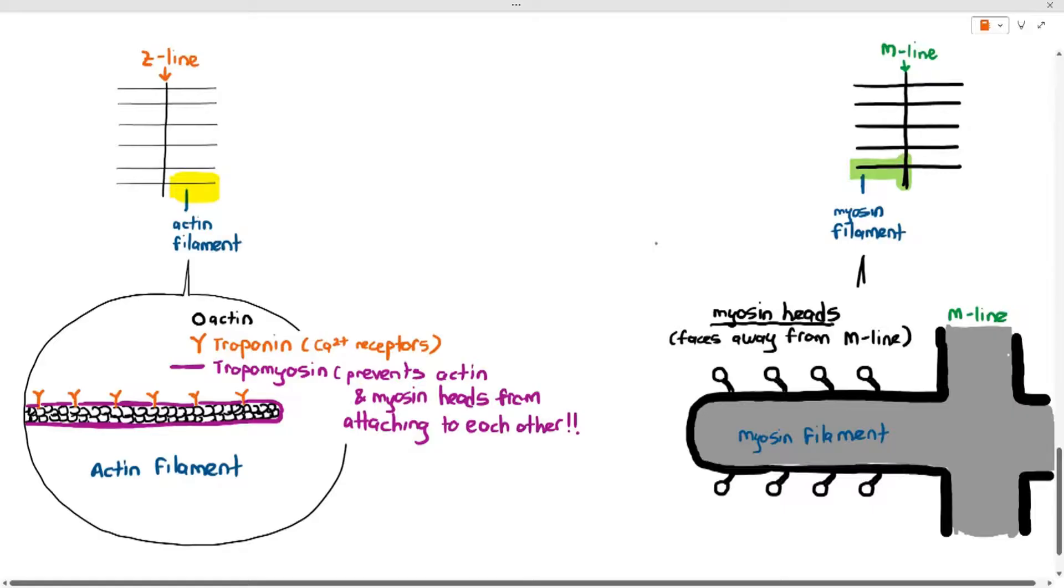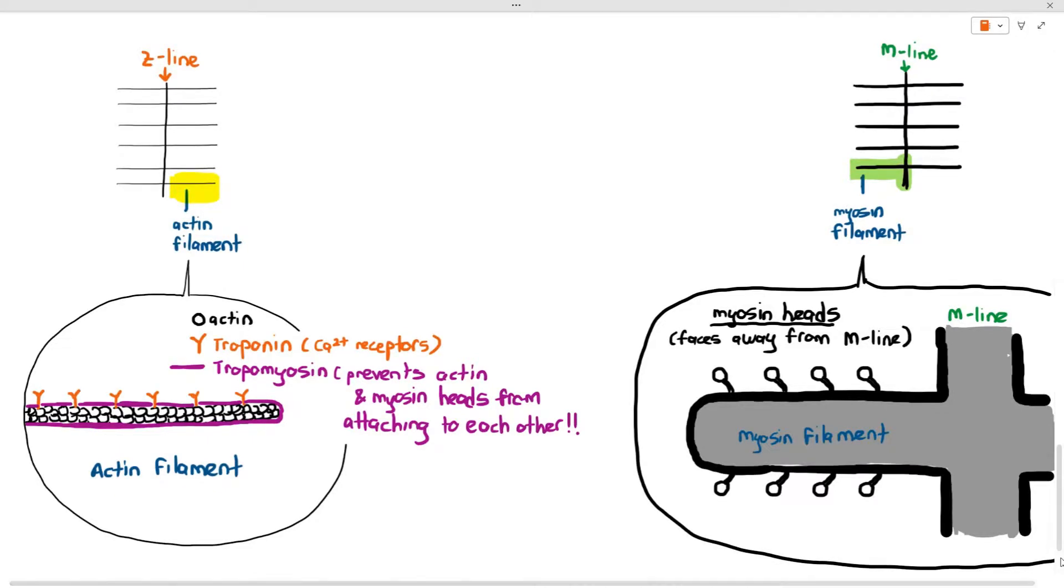The only thing I want you to understand about these myosin heads right now is they face away from the m-line. The heads are leaning away from the m-line, not leaning towards the m-line. When you mentioned tropomyosin you talked about the myosin head, and now I'm introducing myosin heads, so something needs to happen between the actin filament and the myosin heads during muscle contraction.